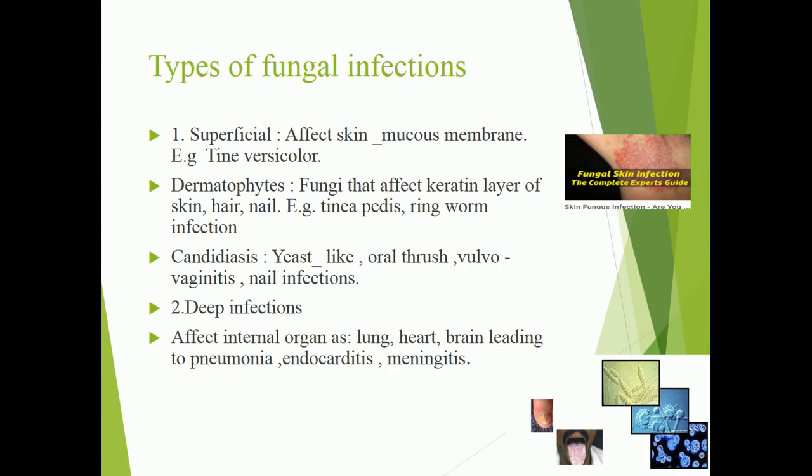Fungi cause various types of infections. The first type is superficial infection, which can affect the skin and mucous membranes — for example tinea versicolor. The second type involves dermatophytes, which affect the keratin layer of the skin, hair, and nails — for example tinea pedis and ringworm infections. Another type is candidiasis, caused by Candida albicans, including vulvovaginitis and nail infections. Deep infections are those in which fungi affect internal organs such as lungs, heart, and brain, leading to pneumonia, endocarditis, and meningitis.